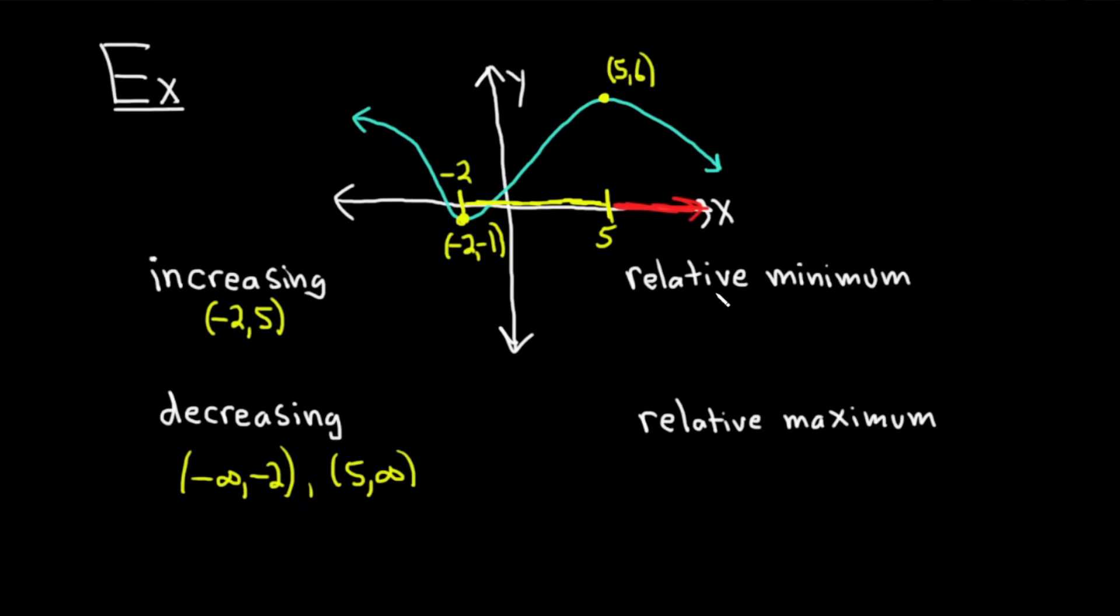Relative minimum, let's do this. So a relative minimum is a y value that is the smallest y value relative to the y values around it. That's why it's called relative. Some people call it a local minimum. So in this particular example, negative 1 is a relative minimum. So y equals negative 1, or just negative 1, is the relative minimum. Because negative 1 is smaller than the y values around it.